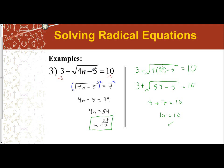So I isolated my radical by undoing the addition around it, and then once the radical is isolated, I do the opposite operation, which is squaring both sides, and then solve like a basic two-step equation.